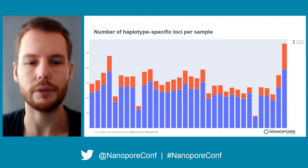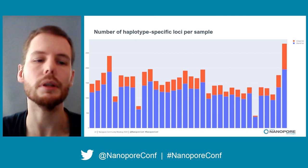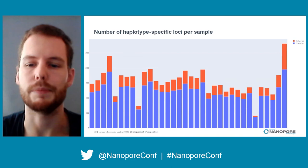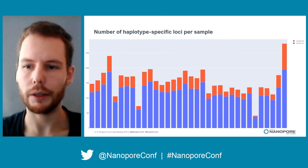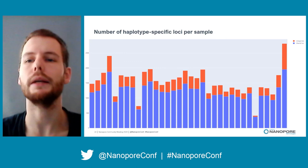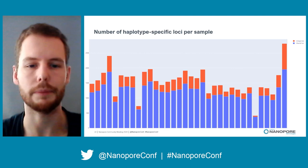If we do this for a bunch of samples, we get about 1,500 haplotype-specific loci per individual. Those highlighted in red, about 200 to 300, are strictly sample-specific — they're only seen once in this entire cohort. This approach might still need some tuning, but this is the picture we're looking at at the moment. You can also see that there are some outliers with notably lower and notably higher numbers, and it yet remains to be investigated why these differences are there.